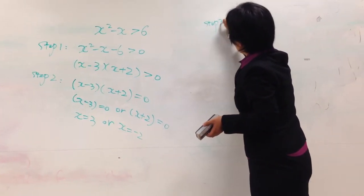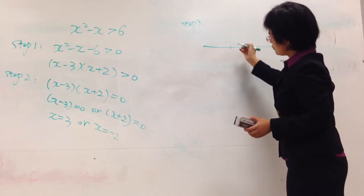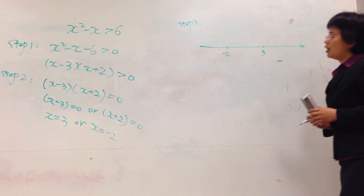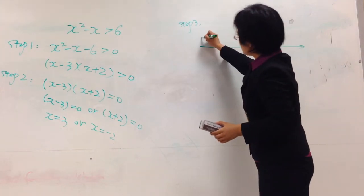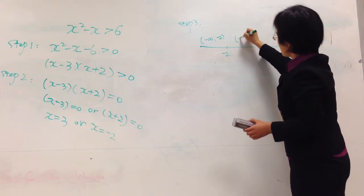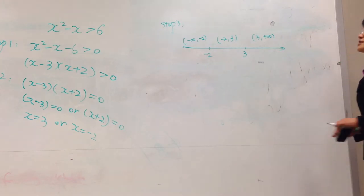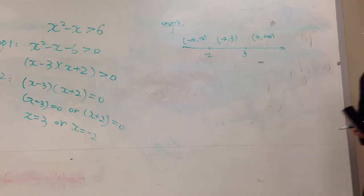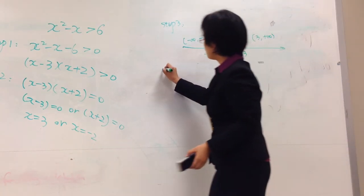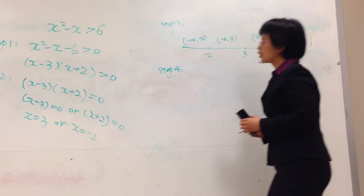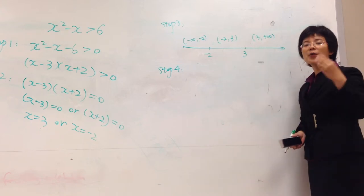Step 3: using those two solutions, we draw a number line and use them to divide the number line into three intervals. Negative 2 and positive 3 divide the whole number line into three intervals: the first is negative infinity to negative 2, the second is negative 2 to positive 3, and the third is positive 3 to positive infinity.